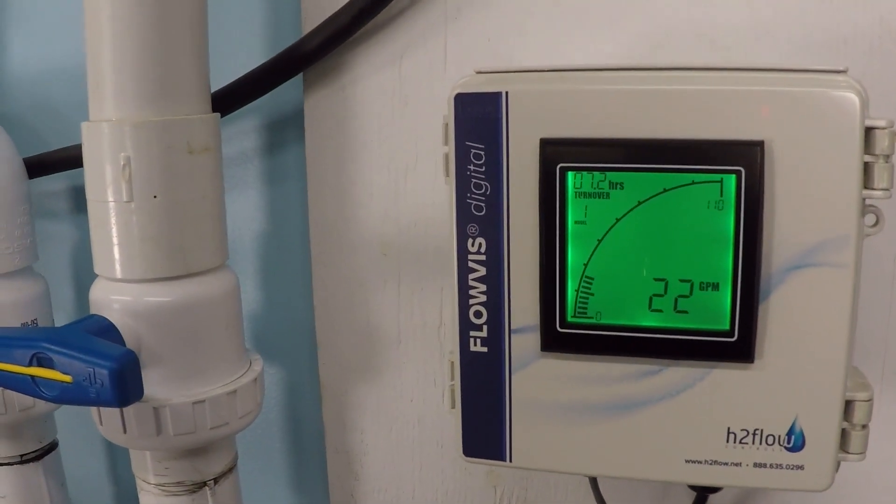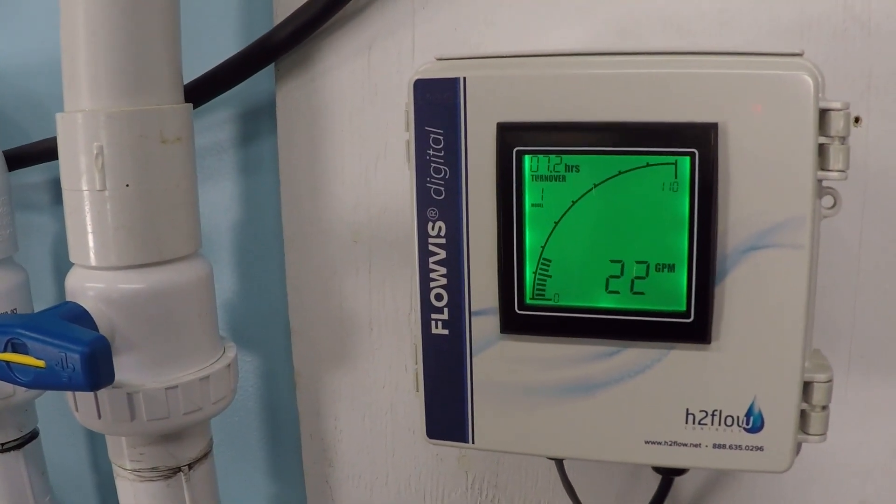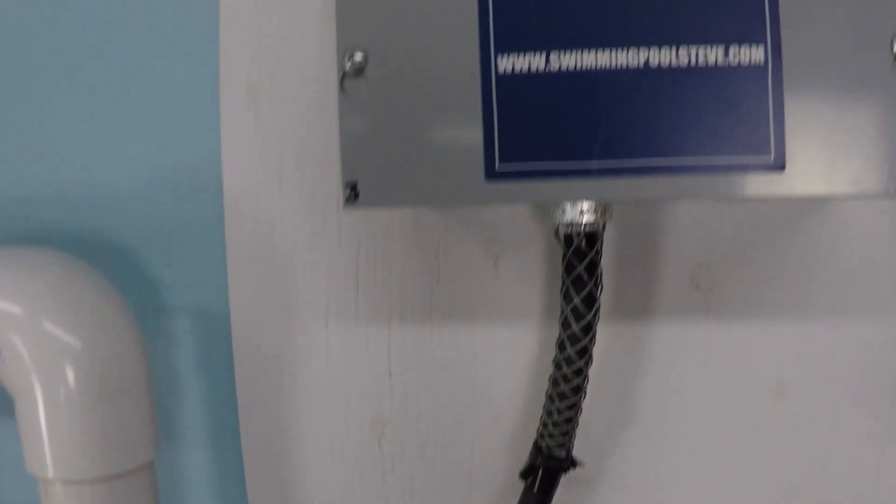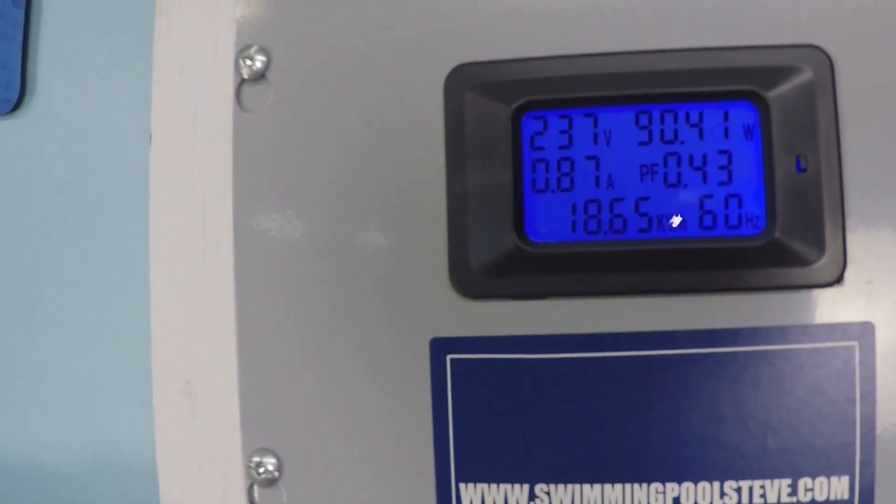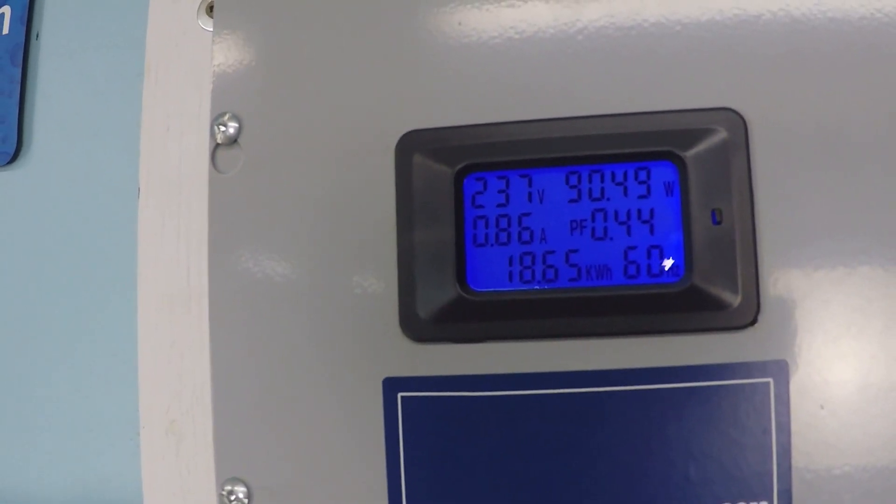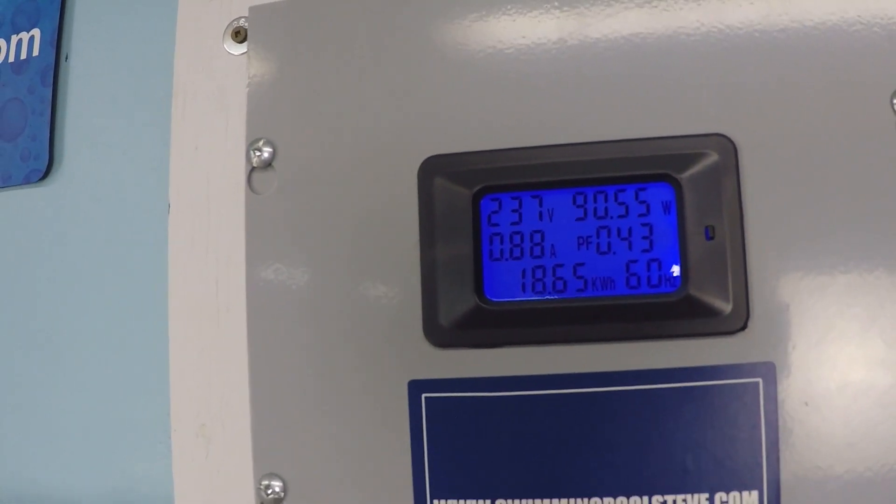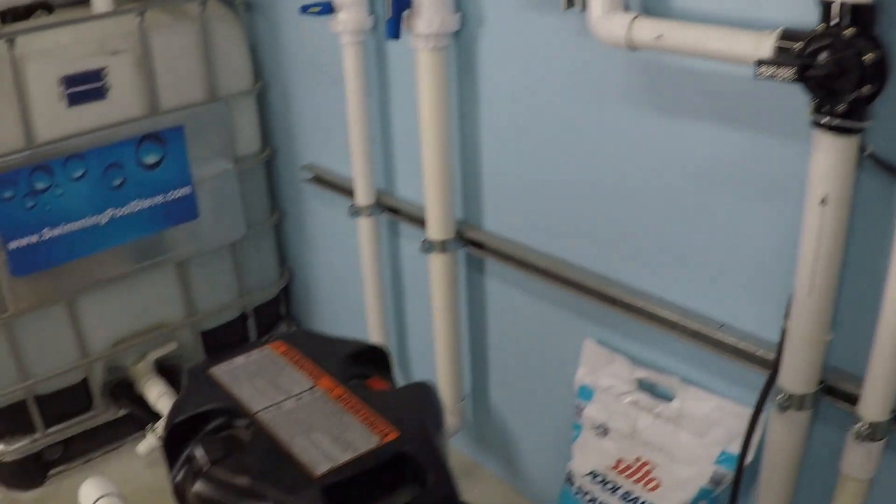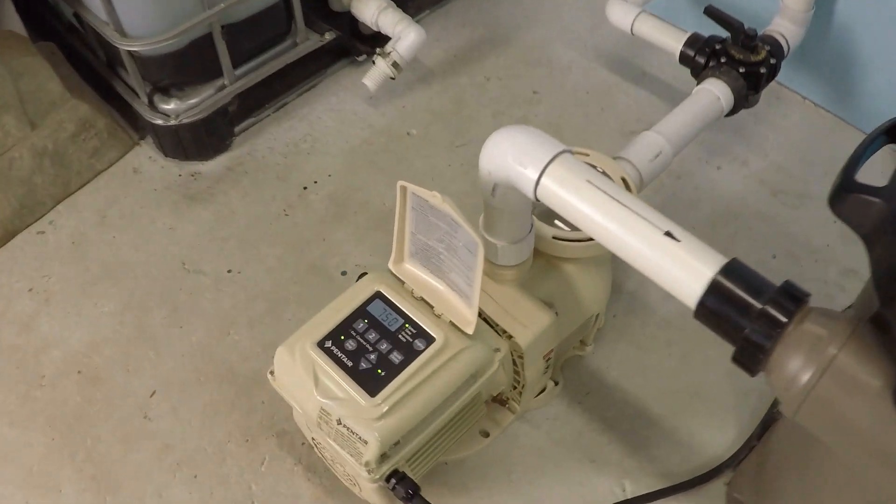Right now we're already running at 750 RPM so that's going to be our first test point and as you can see we're achieving 22 gallons per minute. At the top right corner, just over 90 watts is what the pump is consuming at 750 RPM.